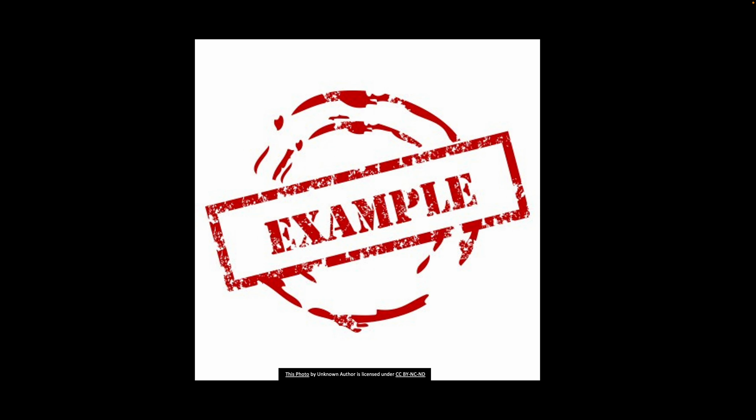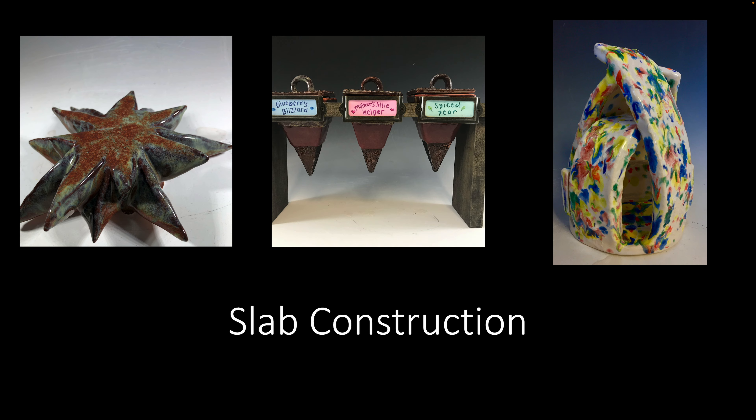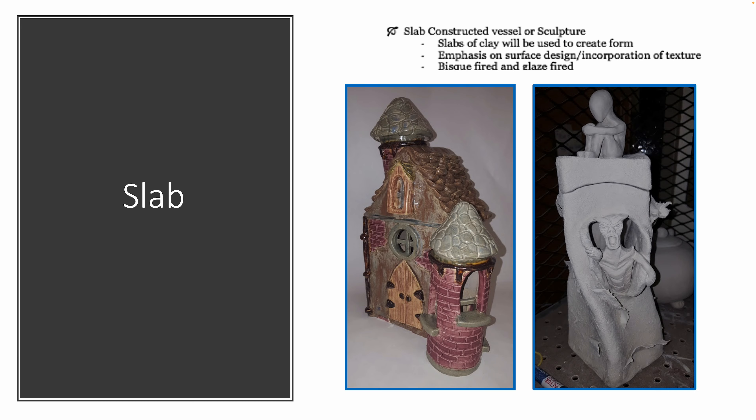Here are some former student examples. With each project, students will have a wide variety of choice. All of these examples are slab built, but as you can see, students have chosen different forms, different scales, and obviously different glazes. We've done slab houses, slab boxes, slab sculptures — I've done clocks, I've done lamps. So I will offer your students a variety of options.